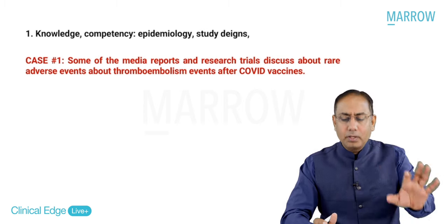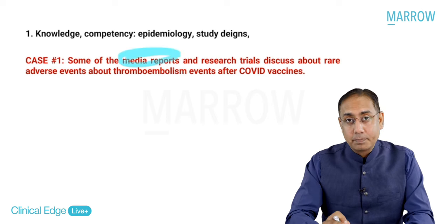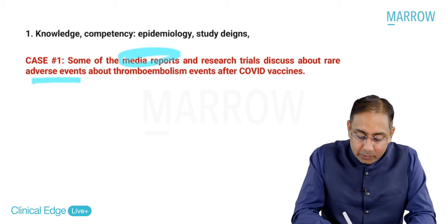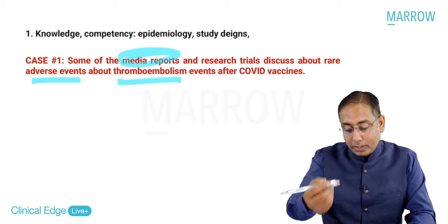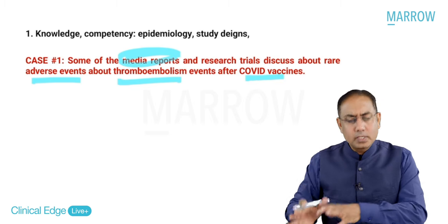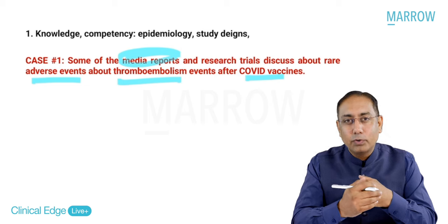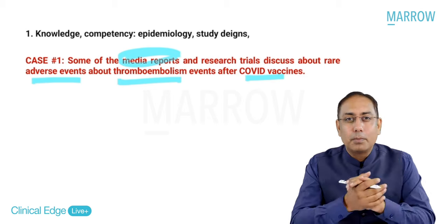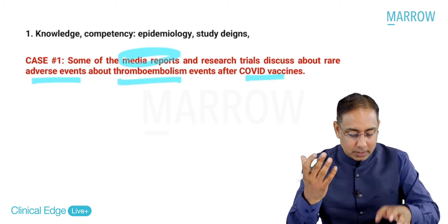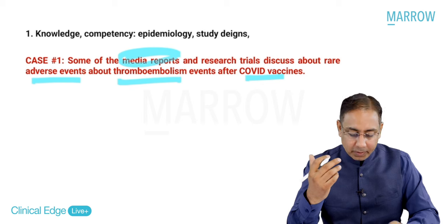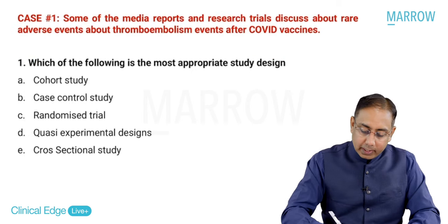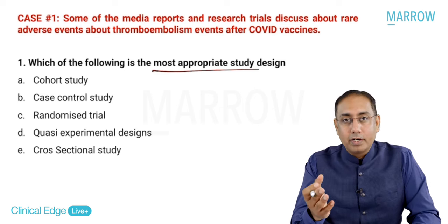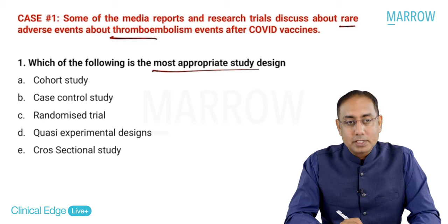Case number one involves media reports - newspapers, journals, articles, and research trials discussing some rare adverse events about thromboembolic phenomena after COVID vaccines. We already know that COVID vaccines like Covishield, AstraZeneca, ChAdOx1 strain, had some reports about thromboembolic phenomena related to these vaccines. The question is: which of the following is the most appropriate study design to study this rare adverse event?